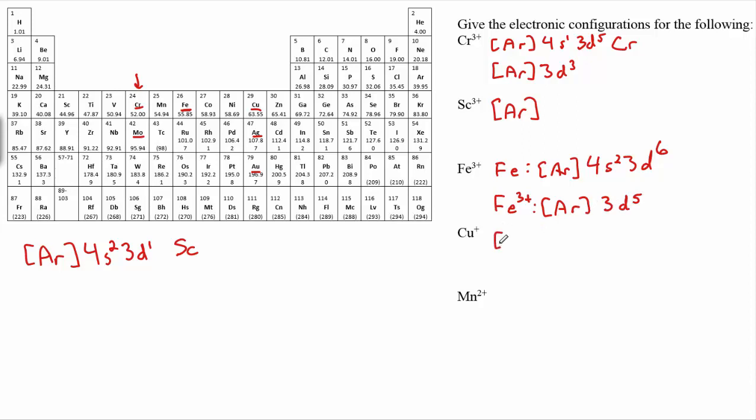If we start off with copper, just plain old copper, we have argon. And again, copper is an exception, so instead of being 4s2 3d9, it's 4s1 3d10. So copper +1, then take away the one 4s electron and you're left with argon 3d10. If you'd forgotten copper was an exception here, this is one you'd definitely get wrong.